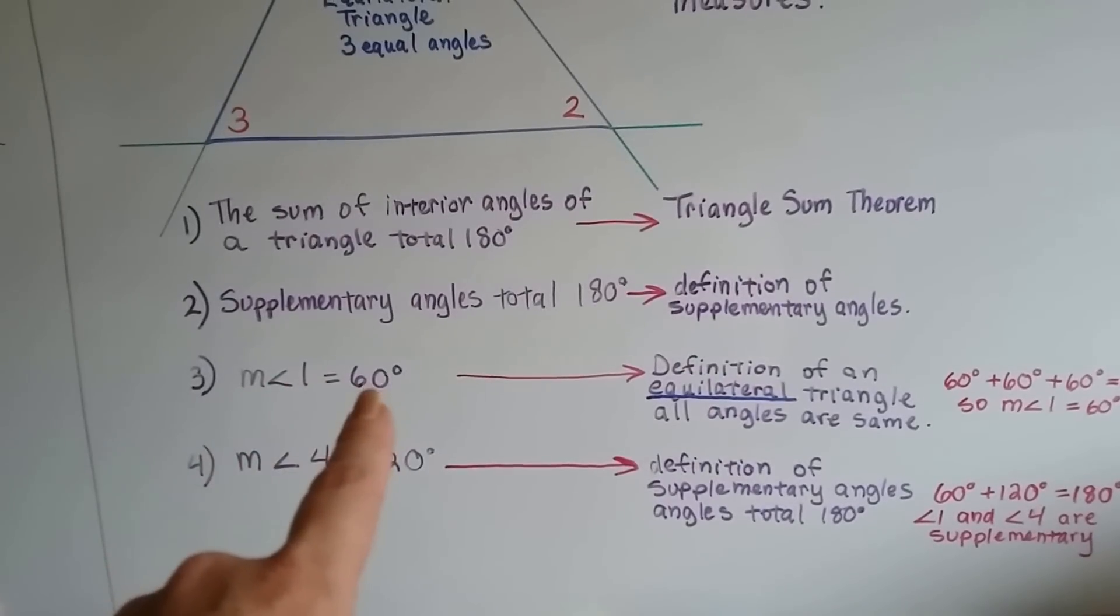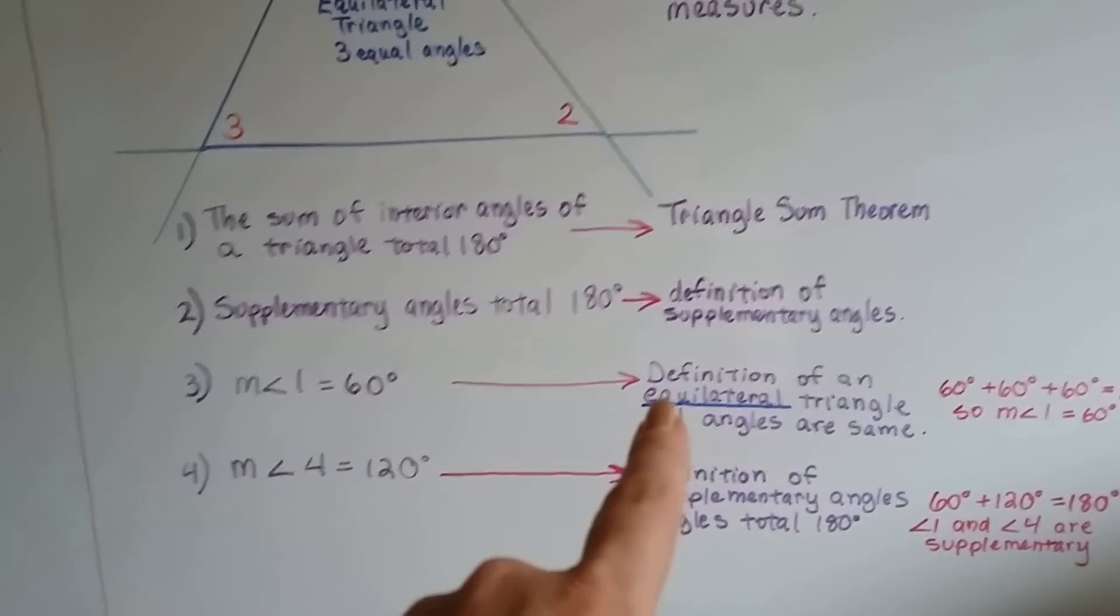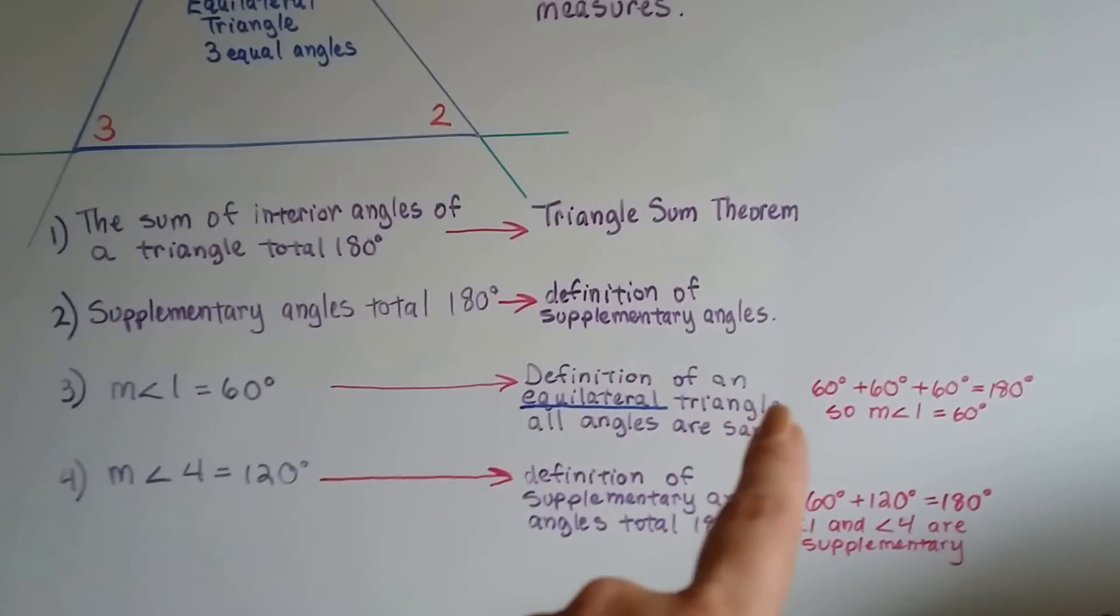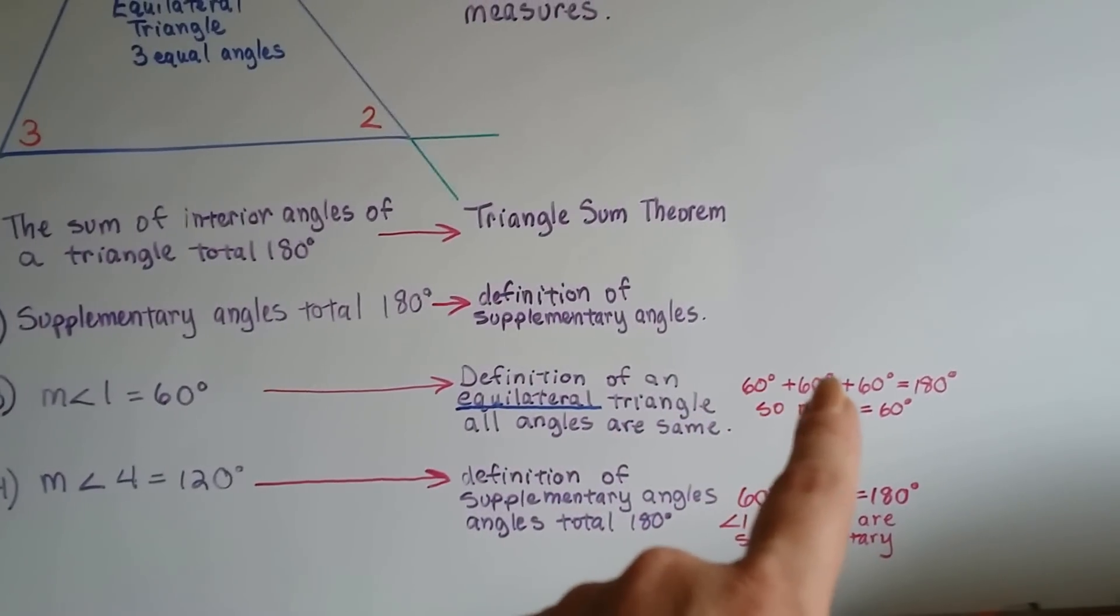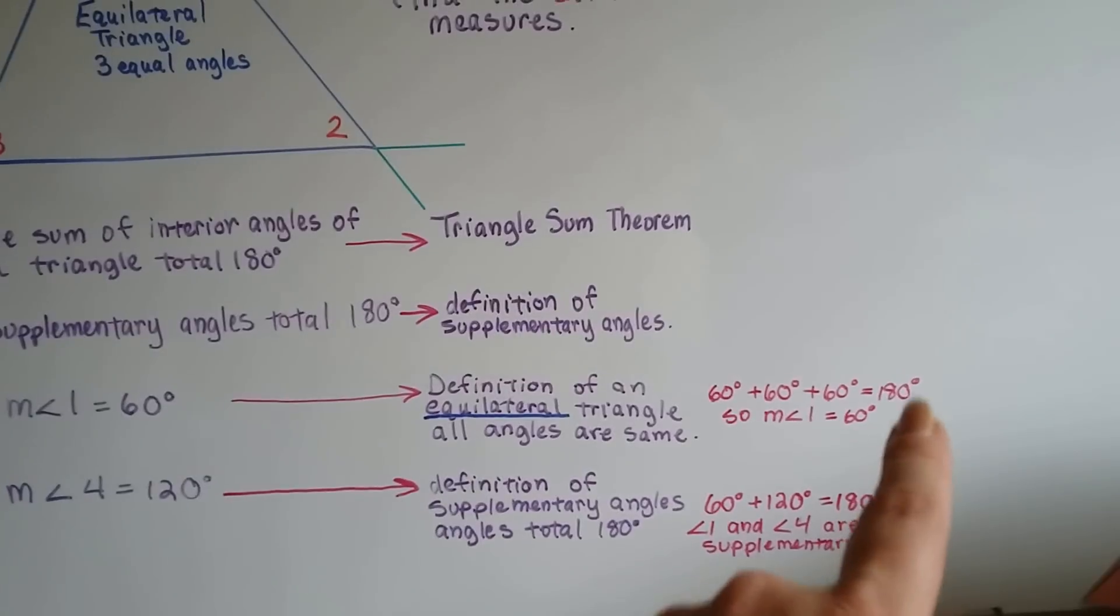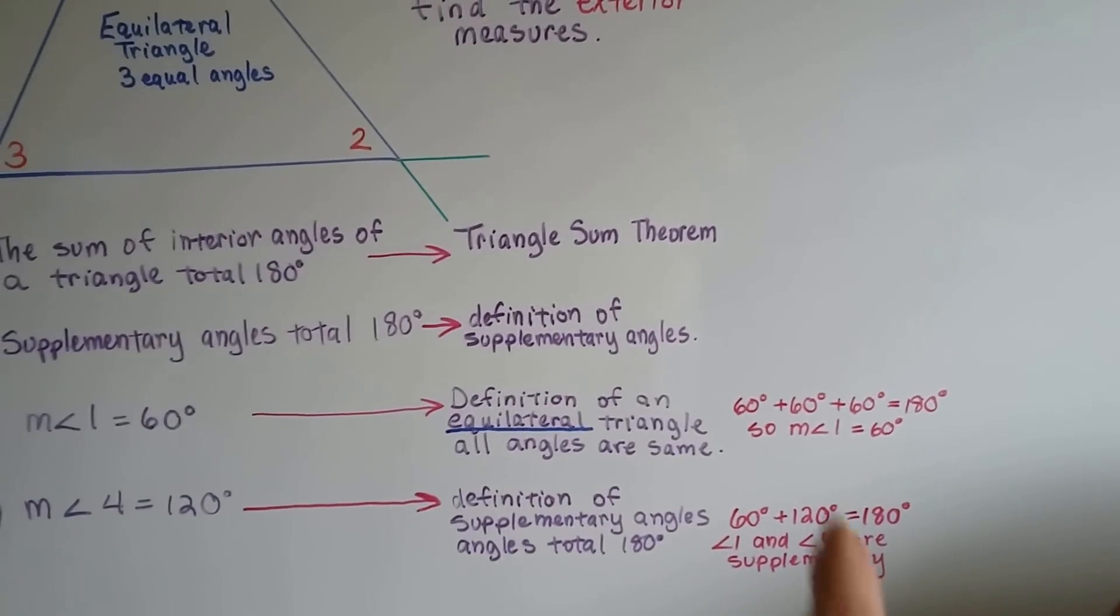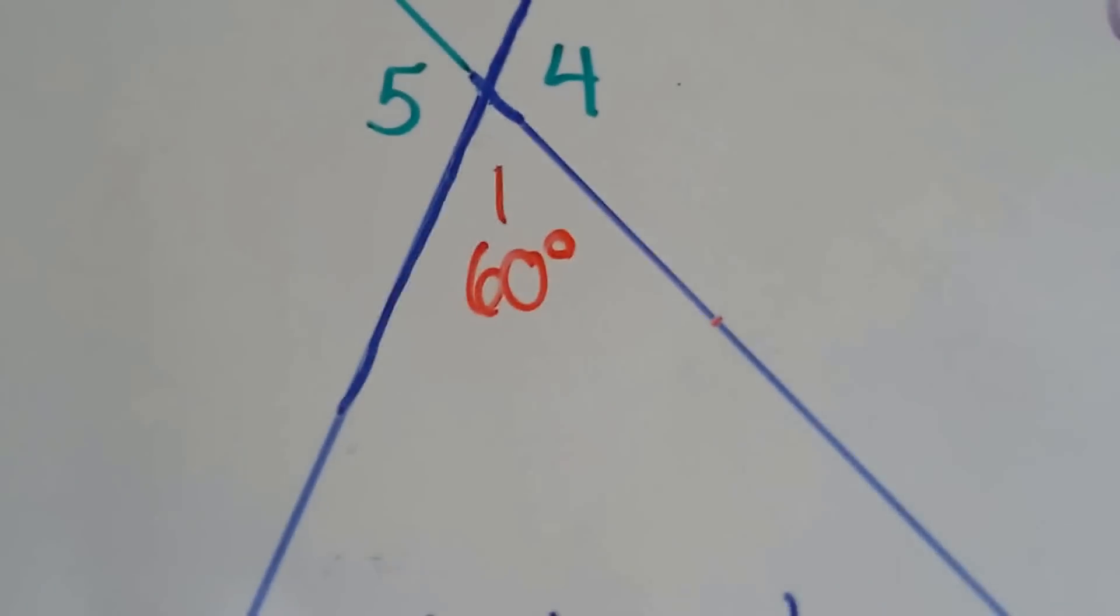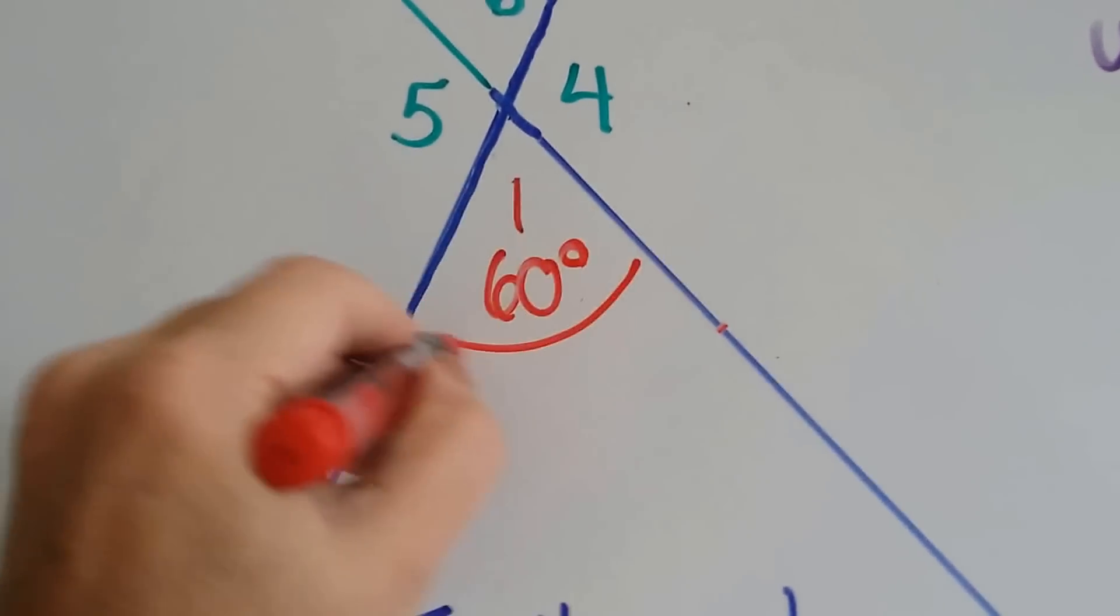Well, then that means that the measure of angle 1 is 60 degrees because it's an equilateral triangle, and all the angles are the same. So the measures must be 60 degrees plus 60 degrees plus 60 degrees to total that 180, right? So the measure of angle 1 is 60 degrees. So now we know that, and we've proven it, okay? We know it's 60 degrees right here, okay?